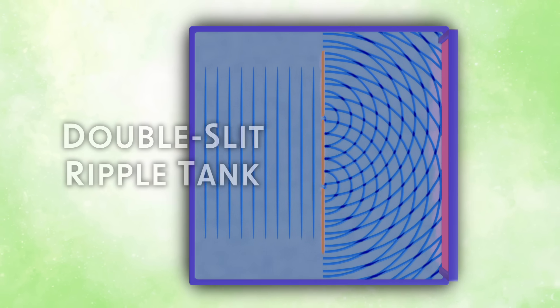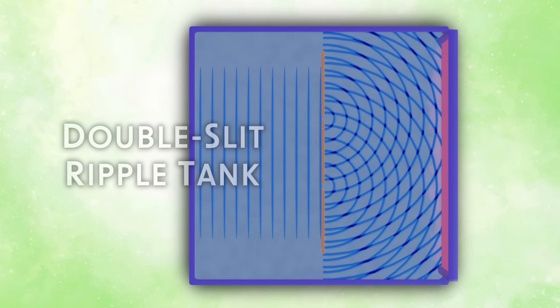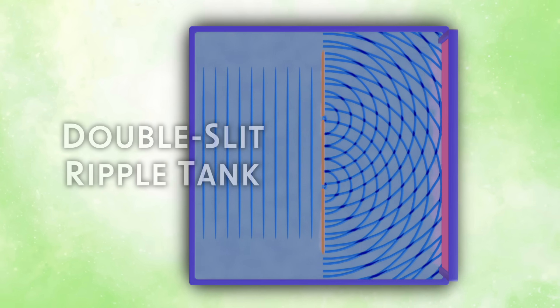As wave valleys cross, they form lower waves. When wave peaks meet valleys, they cancel each other out.